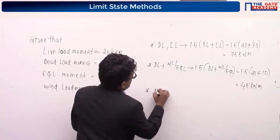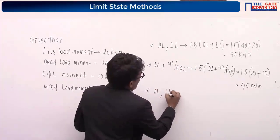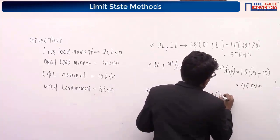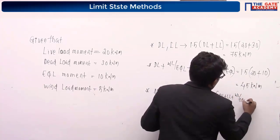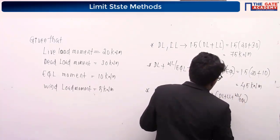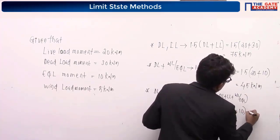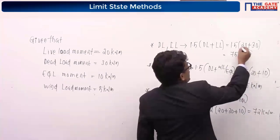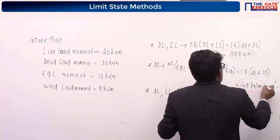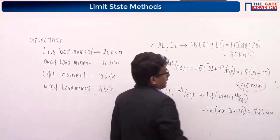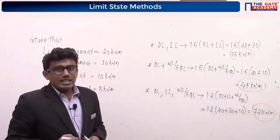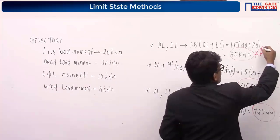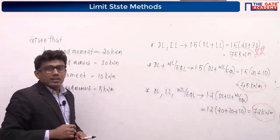For load combination 3 — dead load plus live load plus wind load or earthquake load — the partial safety factor is 1.2. So design moment = 1.2 × (20 + 30 + 10) = 72 kN·m. Among the three values — 75, 45, and 72 kN·m — the maximum is 75 kN·m, which is the design moment.